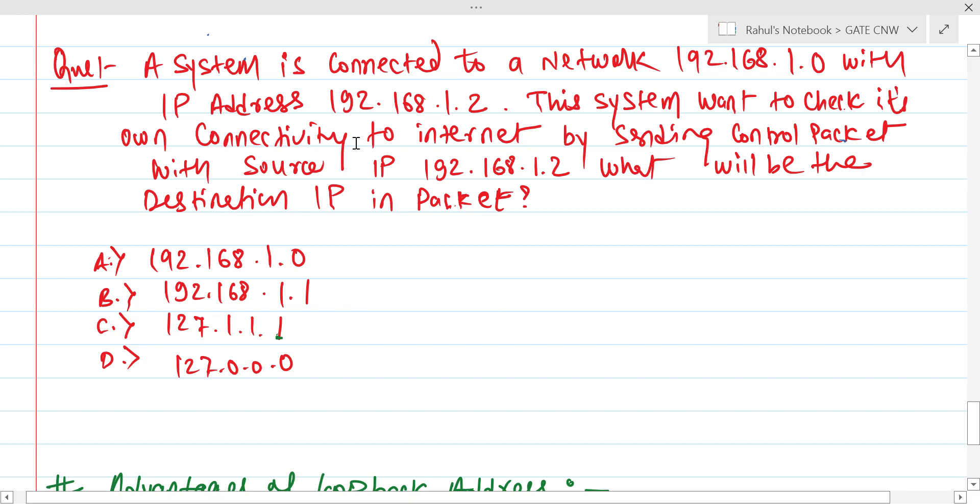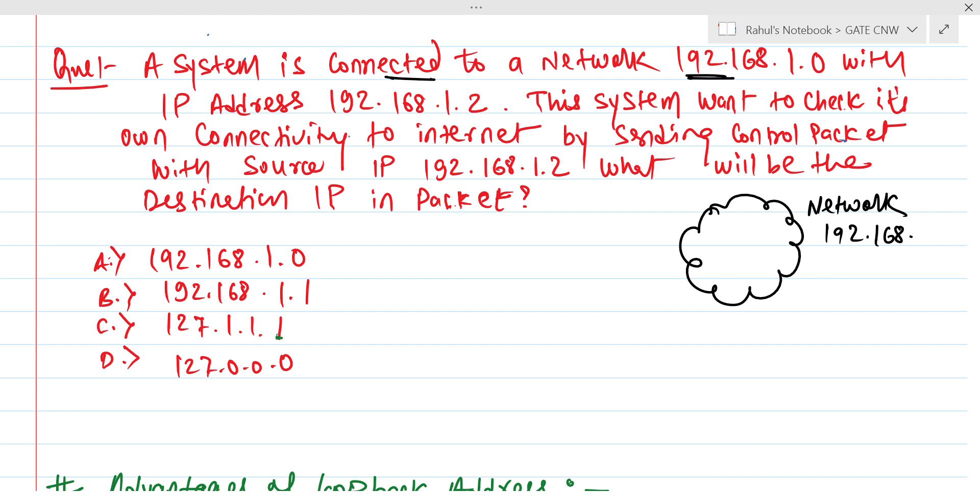See here, a system is connected to a network 192.168.1.0. The concept is that this is a network, and as we already discussed in IP addressing, each network has its own ID. So the network ID is given as 192.168.1.0.